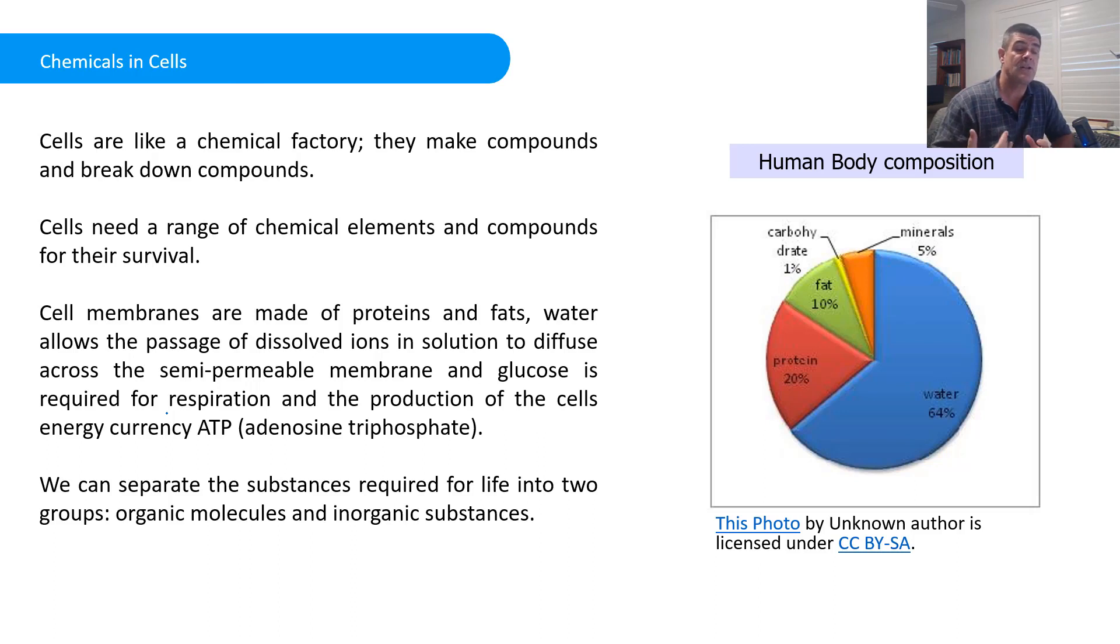Cells need a range of different chemical elements in order for them to survive. And we can see some of those, in fact we've encountered some of those already in our study of things like cell membranes. So we know for example that cell membranes are made of proteins and also of fats, the bilipid layer that's embedded with different proteins, channel proteins, carrier proteins and proteins that are part of the support structures for the cell membrane.